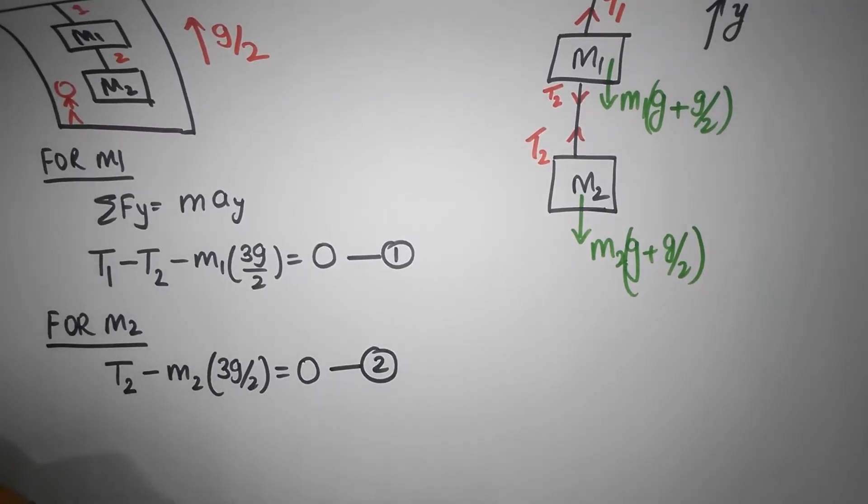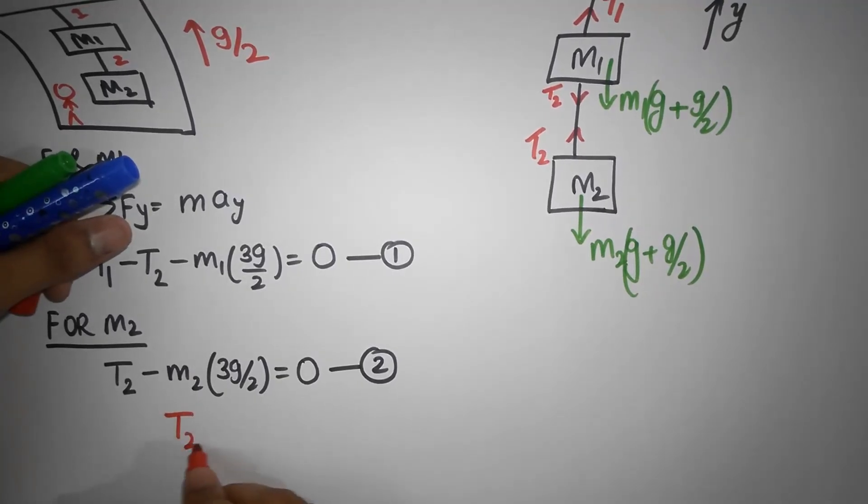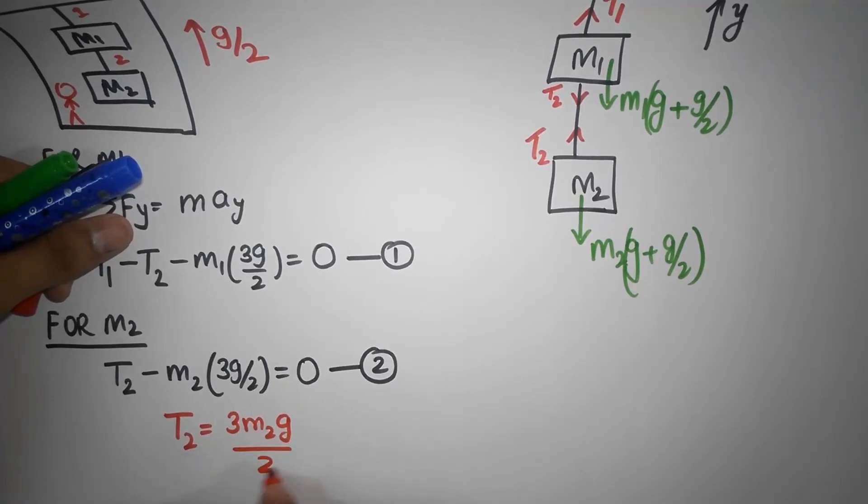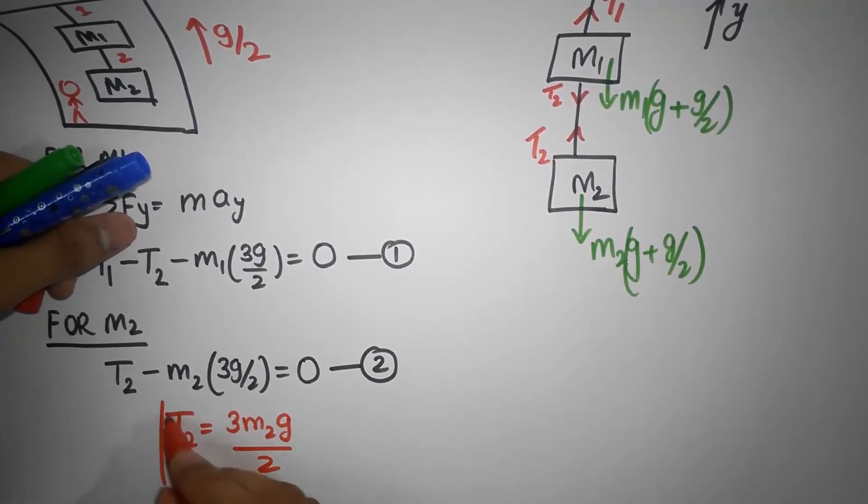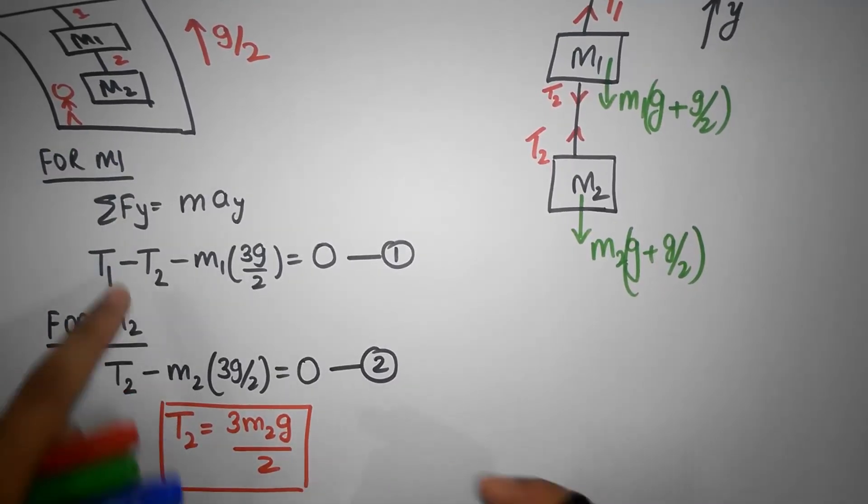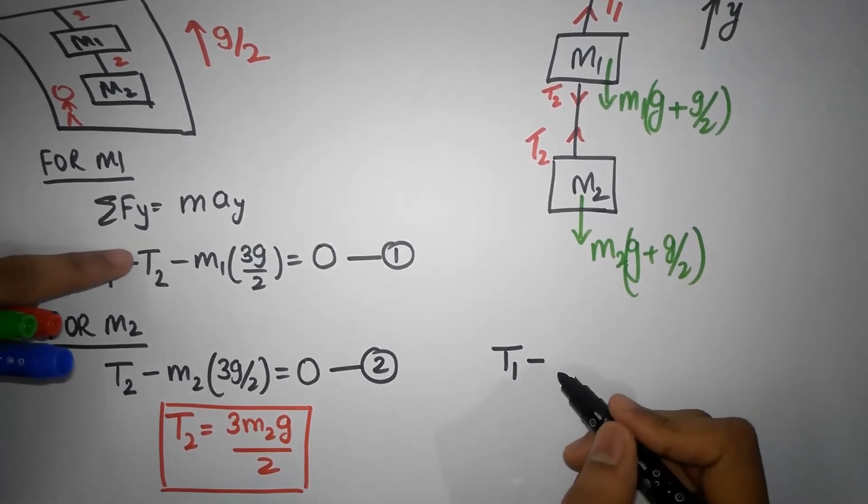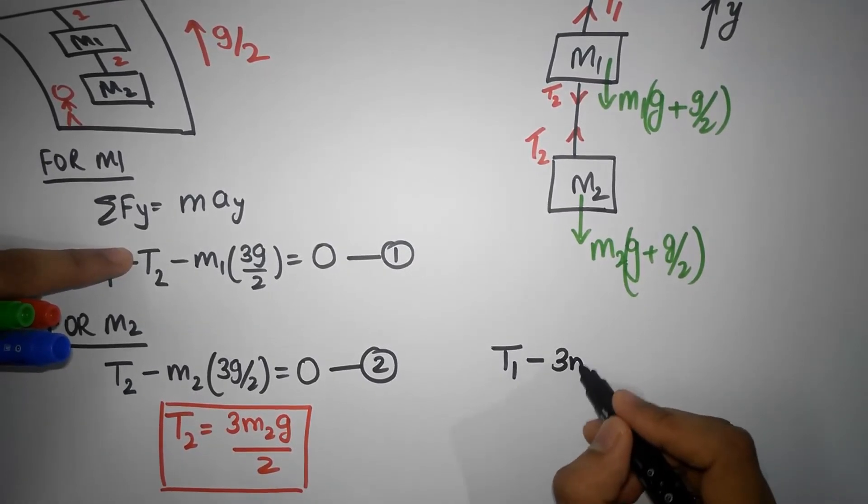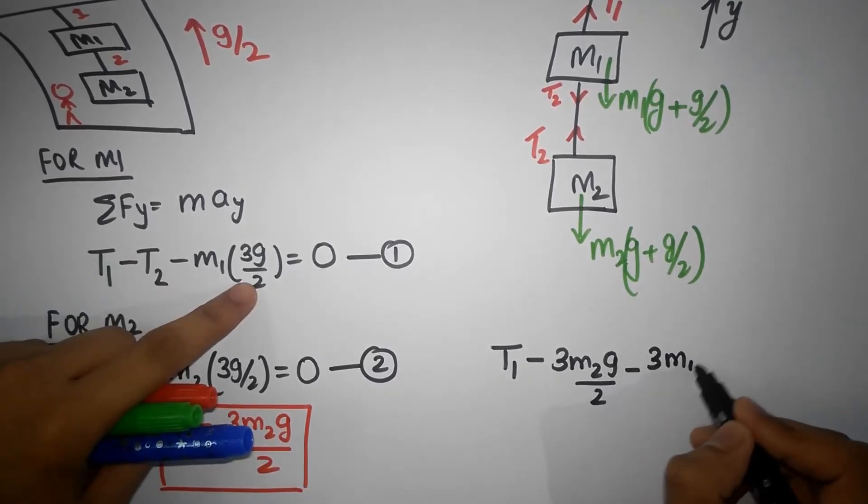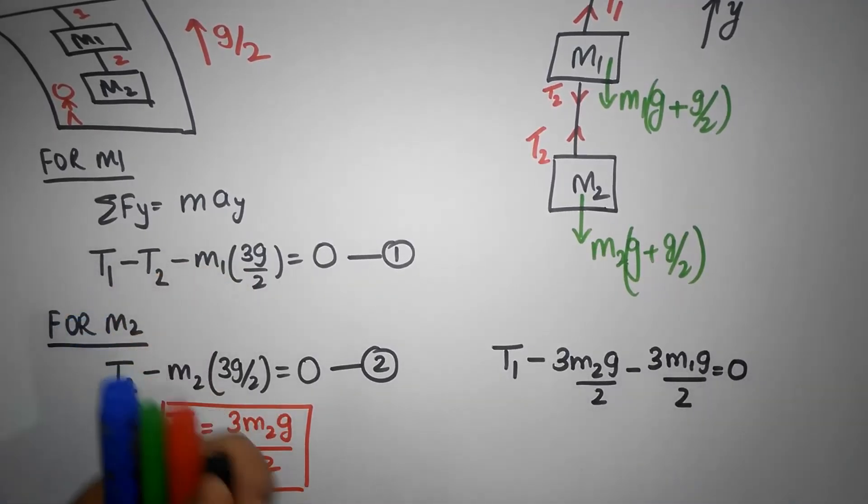Notice that equation number two directly gives me the tension force. So that tension is going to be 3 m2 g divided by 2. So we got our first answer, and what we will do now is we will substitute this guy over here. So T1 minus T2 which is 3 m2 g by 2 minus 3 m1 g by 2 equal to zero. So from this I have my answer.